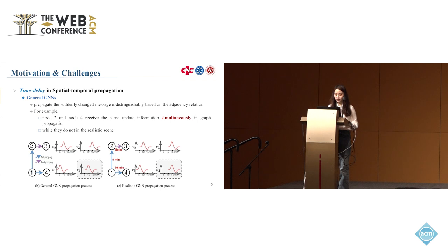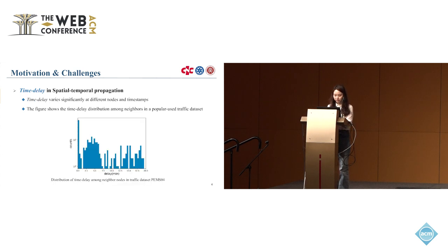As we can see from the right figure, there's a five-minute delay between node 1 and node 2, and a 10-minute delay between node 1 and node 4. Due to road capacities and road lengths, the delays between different roads are different. We also show a figure to statistically give the time delay distribution among neighbors in a popular traffic dataset, where the x-coordinate is the delay and the y-coordinate is its corresponding counts.